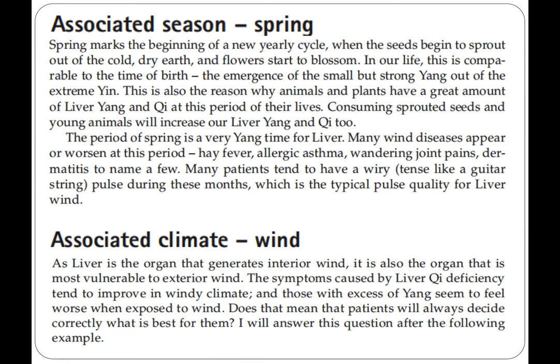The period of spring is a very yang time for the liver. Many wind diseases appear or worsen at this period: hay fever, allergic asthma, wandering joint pains, and rheumatism, to name a few. Many patients tend to have a fiery pulse — described as tense like a guitar string — during these months, which is the typical pulse quality for the liver meridian.